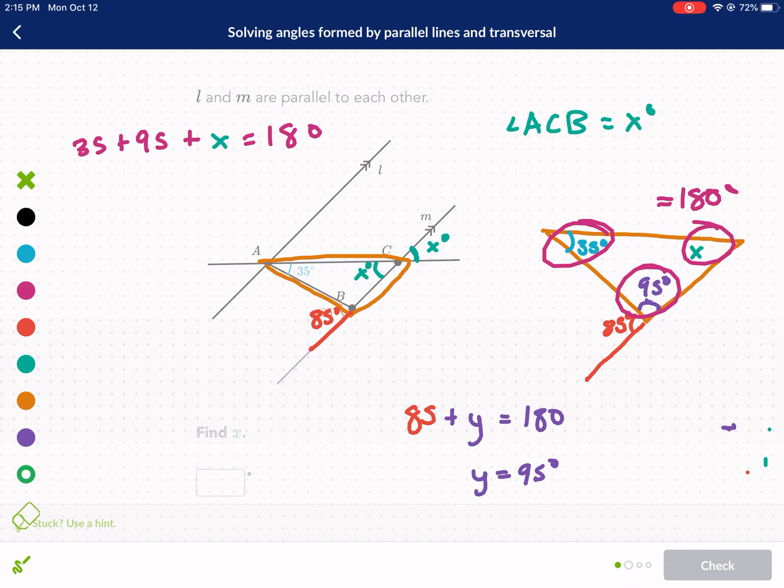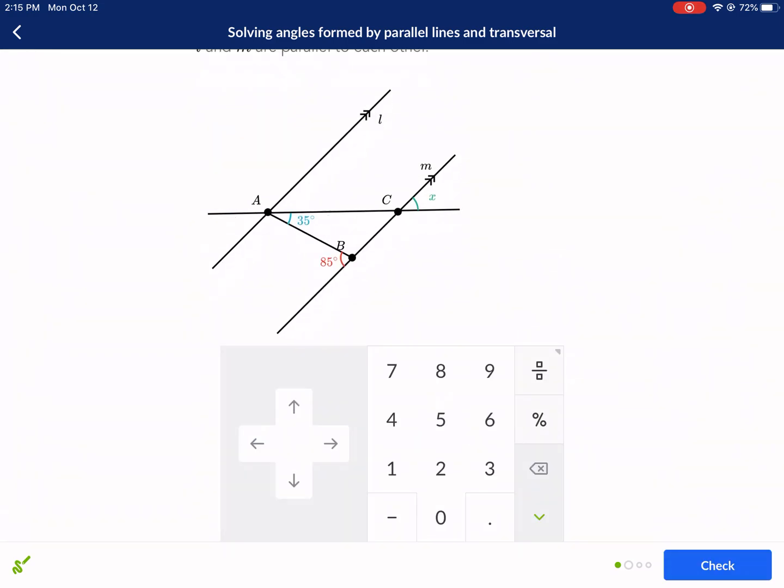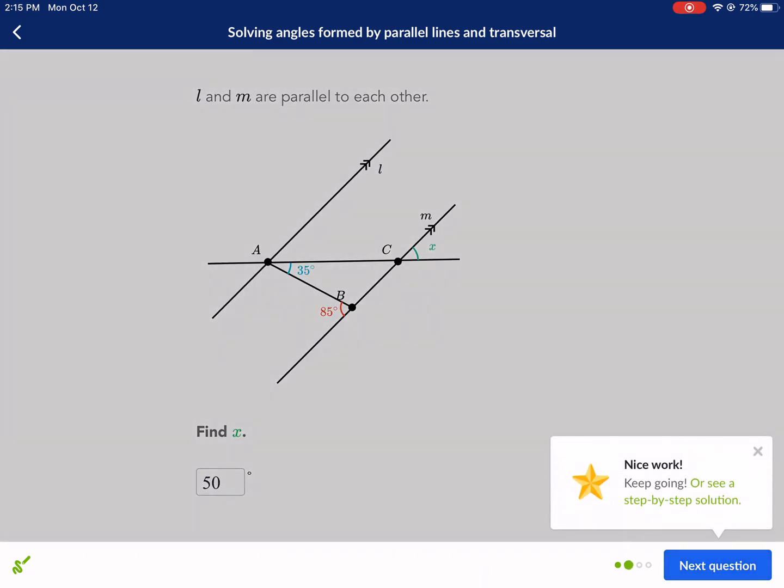So now we just do 180 minus 95 minus 35. And I get 50. So I get x equals 50. I changed color on accident. You guys get my point. That's essentially, we're going to subtract 35 minus 95 for both sides. And we get x equals 50. So 50 degrees. Next question.